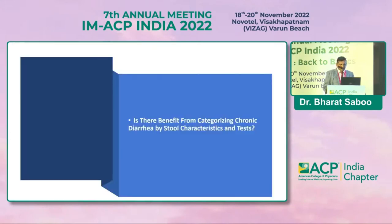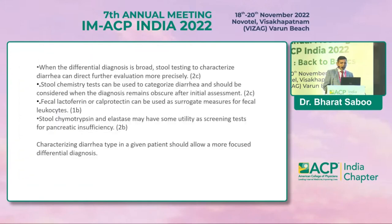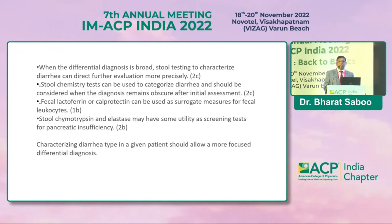Stool testing can characterize diarrhea and direct further evaluation. The chemistry of stool can be used to categorize diarrhea and should be considered when the diagnosis remains obscure after initial assessment. Fecal lactoferrin, calprotectin, stool chymotrypsin, and elastase all have some utility. Characterizing the diarrhea type in a given patient allows a more focused differential diagnosis.